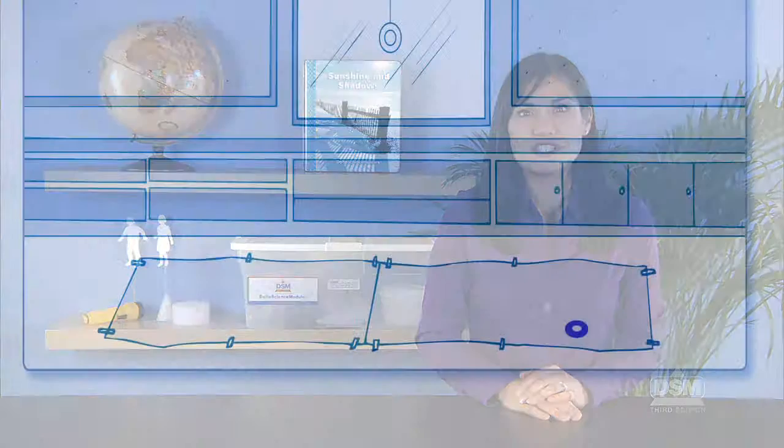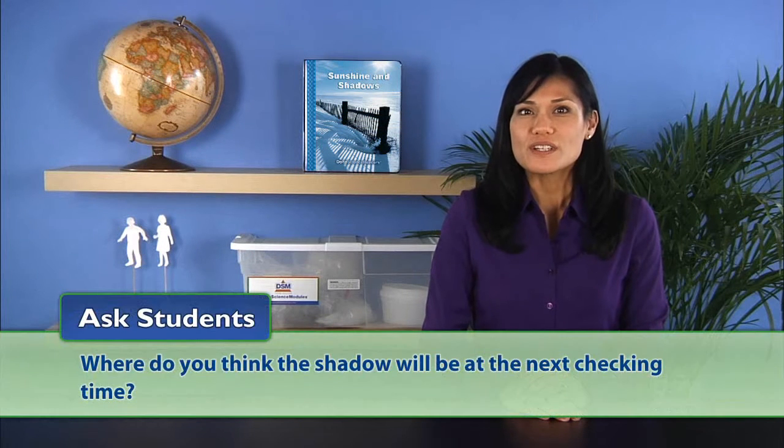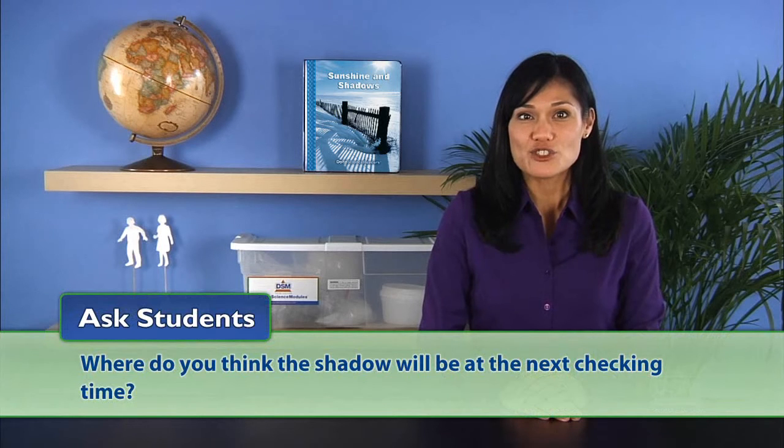At the next time interval, invite a second volunteer to color in the shadow on the paper using green chalk and record the time of day. Ask students, where do you think the shadow will be at the next checking time? Accept all ideas.